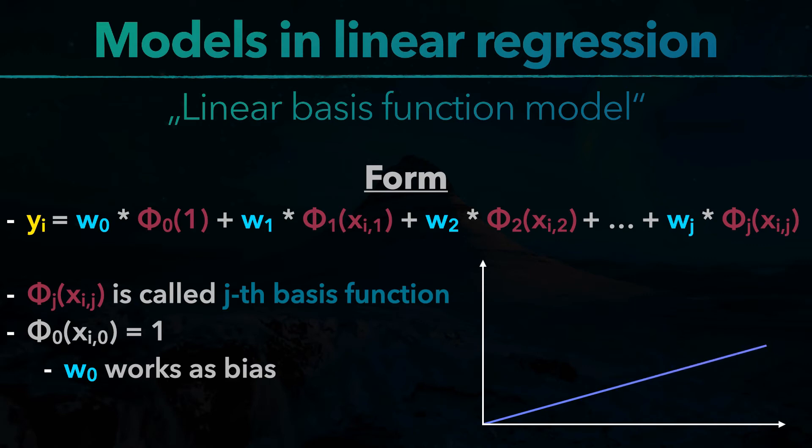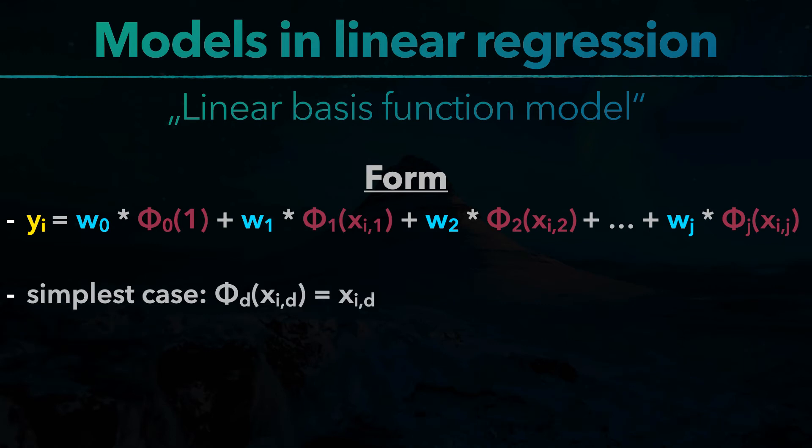Because adding a bias permits the output of the model to be shifted on the x-axis. In the simplest case, we use the linear basis function phi d of xid equals xid, which basically is the same as using no function at all, exactly what we did in the vanilla model. But it is more usual to use non-linear functions to allow the model to exhibit non-linear properties.